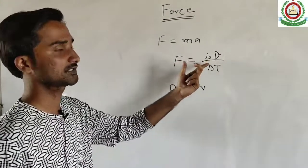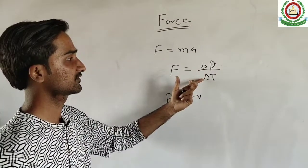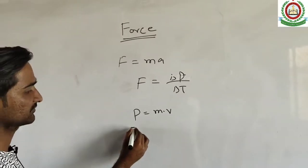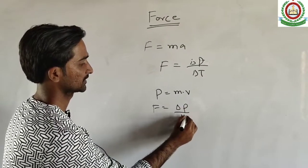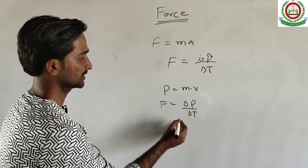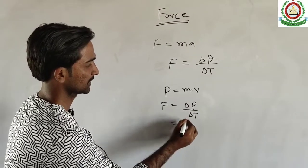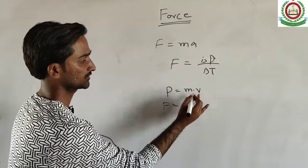If we see that F is equal to delta P over delta t, here we say that P is equal to m dot v. It means P is the product of mass and velocity.